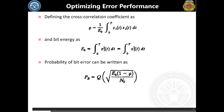We also formulated the expression for probability of bit error, ending up with an expression in the form of a Q function. It is related to three things: number one is Eb, the bit energy; number two is the correlation coefficient between S1 and S2; and number three is the noise PSD. The denominator contains the noise PSD, which is not in our control.